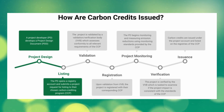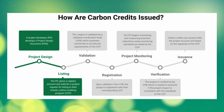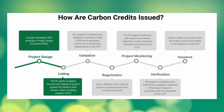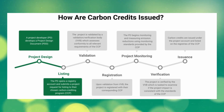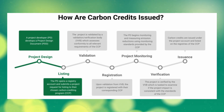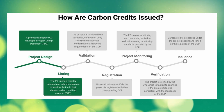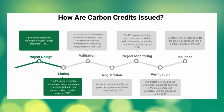Next up is validation — the stage where the PDD is assessed to ensure the project conforms to the requirements of the registry. Validation is not done by the registry itself. The project is required to bring in a validation and verification body, or VVB, which is a third-party auditing firm that reviews the project design document and visits the site. Each registry has their own list of approved VVBs a developer can hire. If everything looks good, the project is validated, officially registered under the registry, and can begin to monitor the level of emissions reductions at their site.